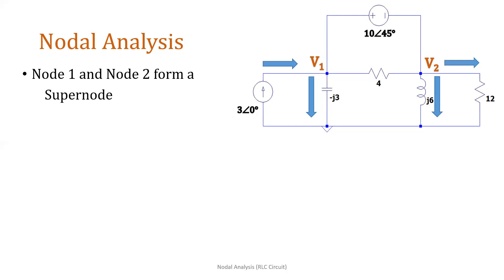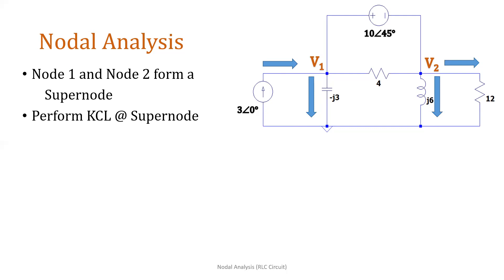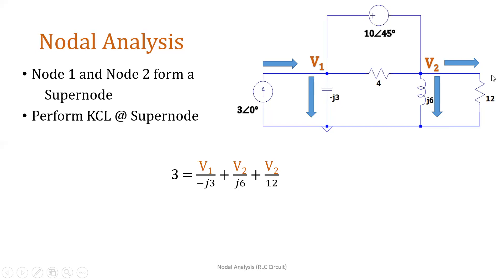We need to perform KCL at the supernode. Imagine we combine node 1 and node 2. The branches we need to deal with are the surrounding ones. Currents going in equal currents going out. We have current going in: 3∠0°. Equal to currents going out: V1 minus 0 over −j3, plus V2 minus 0 over j6, plus V2 minus 0 over 12 ohms.